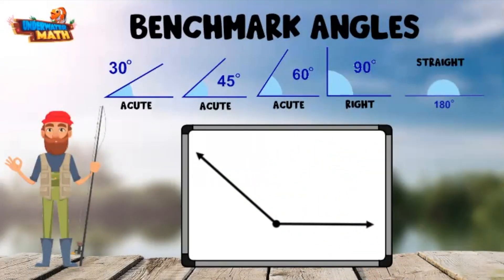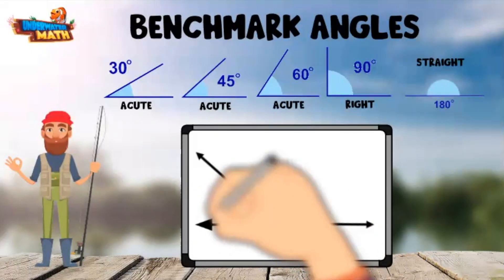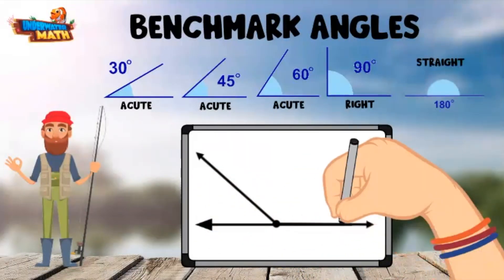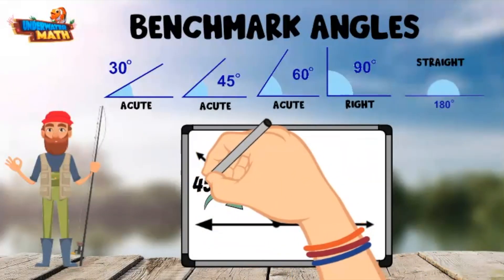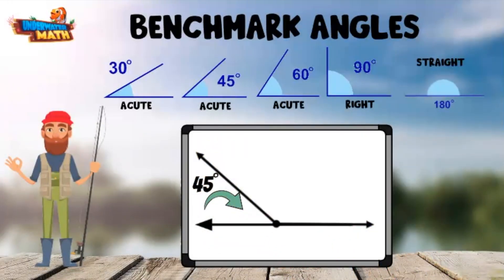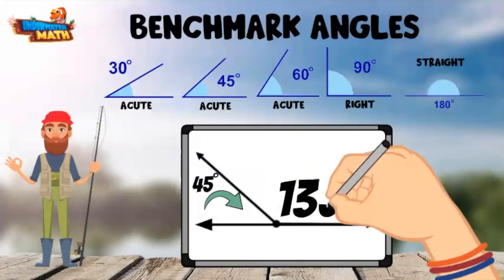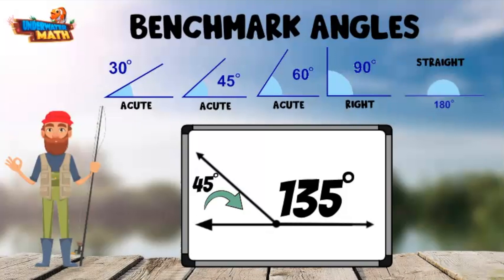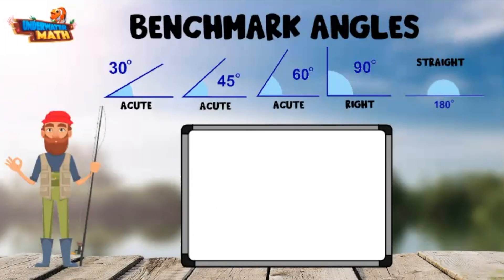Let's try another one. I can tell right away this angle is obtuse, which means it must be more than 90 degrees. If we extended this angle out on the other side to make a straight line, I would say this would be about 45 degrees. 180 degrees minus 45 degrees is 135 degrees, so this angle is about 135 degrees.